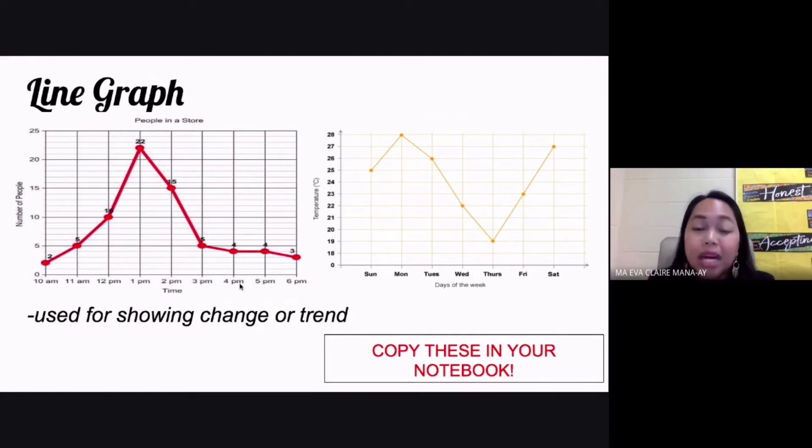Since we cannot control time, your time usually can be found on the x-axis because it's usually your independent variable. The dependent variable would be found on the y-axis of your line graph.